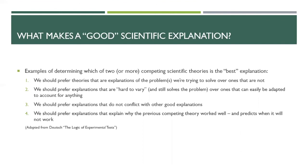We should prefer explanations that are hard to vary and still solve the problem over ones easily adapted to account for anything. We should prefer explanations that don't conflict with other good explanations — all things being equal. And we should prefer explanations that explain why the previous competing theory worked well and predict when it will not. That last one is the gold standard — when that happens, the paradigm starts to shift toward a new theory.